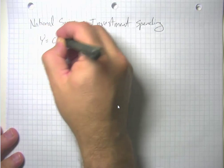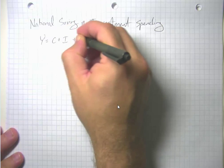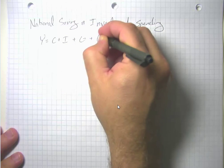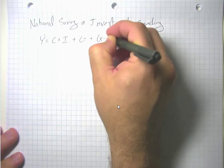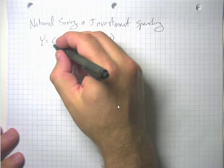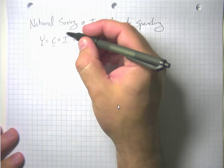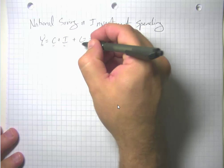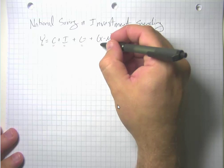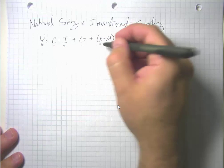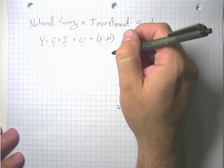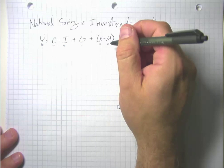You may remember that we have our GDP accounting equation where we say GDP can be used for consumption spending, investment spending, or government spending on goods and services, or it can be exported, or we can fill in some spending with imports.